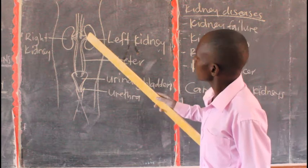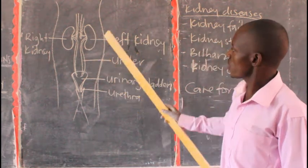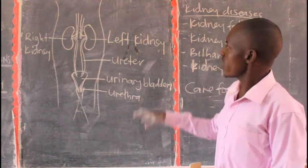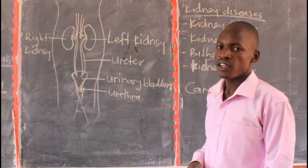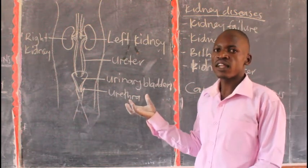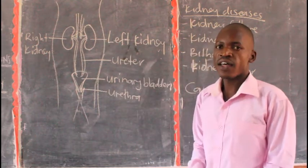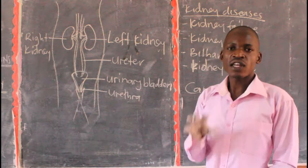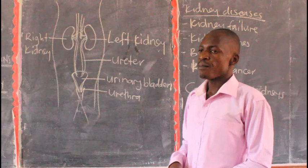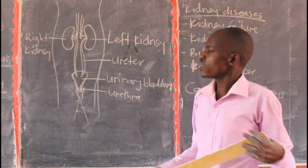What is the function of the ureter? The ureter carries waste products from the kidney to the urinary bladder. After the kidney filters the blood, the waste content which was in the blood is carried from the kidney to the urinary bladder by the ureter. So the function of the ureter is to carry waste materials from the kidney to the urinary bladder.